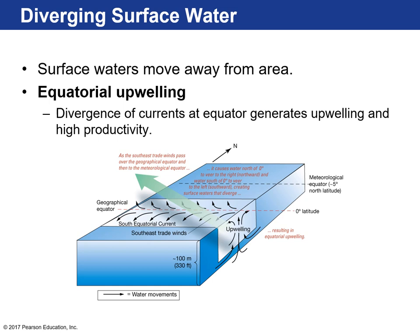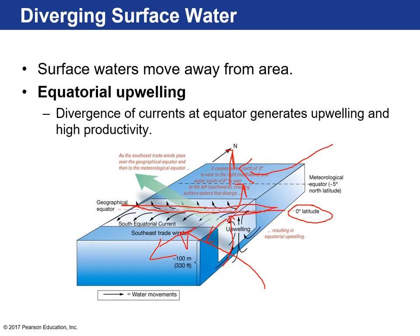Upwelling occurs in several places. One place is directly at the equator. North of the equator the trade winds blow in one direction, south of the equator the southeastern trade winds blow in another. Because ocean waters turn right in the northern hemisphere and left in the southern hemisphere, that causes divergence — surface waters diverge away from the equator. Think of skimming water in a bathtub away from you — deeper water rises to the surface. So deeper water rises at the equator, leading to an abundance of marine activity. We call this equatorial upwelling, resulting in high productivity.